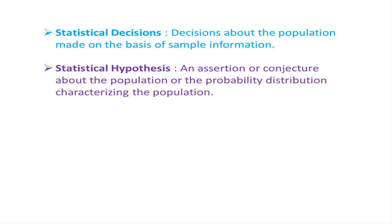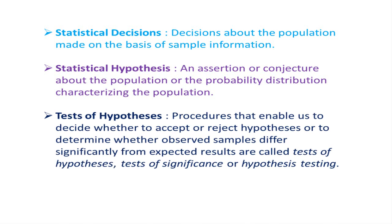Sometimes the results from the sample may be remarkably different from those expected under the hypothesis. In that case, we can say that the observed differences are significant and we would be inclined to reject the initial hypothesis. Procedures that enable us to decide whether to accept or reject a hypothesis, or to determine whether the observed samples differ significantly from expected results, are called tests of hypothesis, tests of significance, or hypothesis testing.